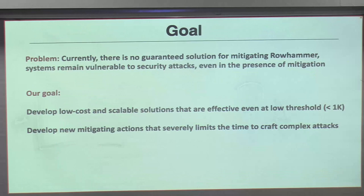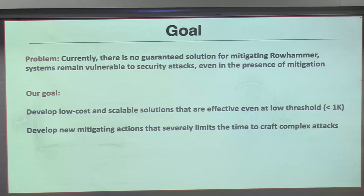The goal of our work for the last two to two-and-a-half years has been: how do we build better trackers that scale to low thresholds without breaking the bank? They need very low overhead in terms of SRAM and performance. Second, how do we build a mitigating action different from victim refresh, so that complex pattern attacks do not affect the mitigation?